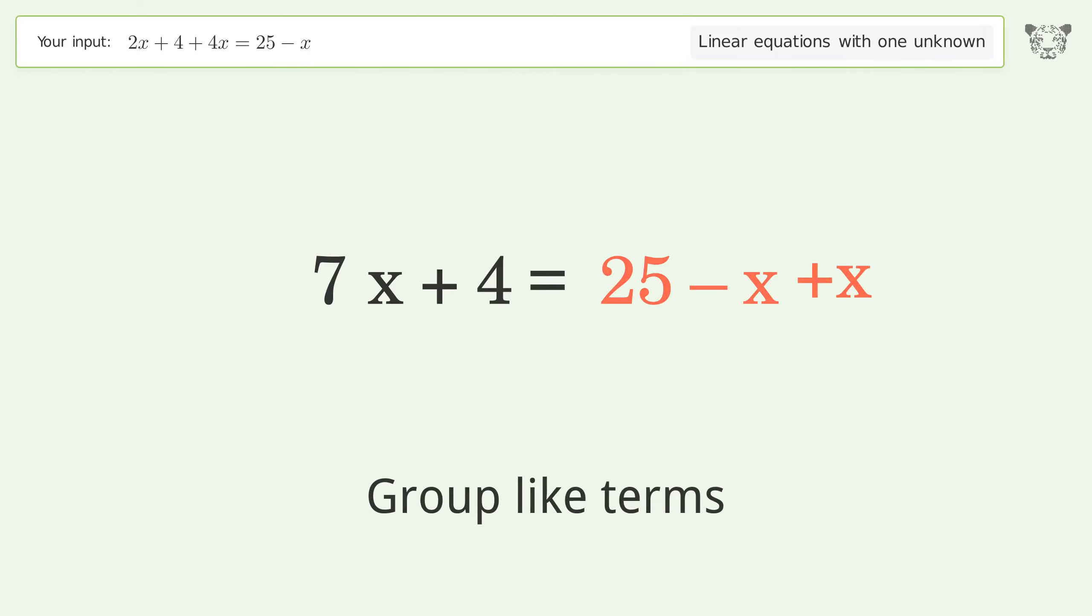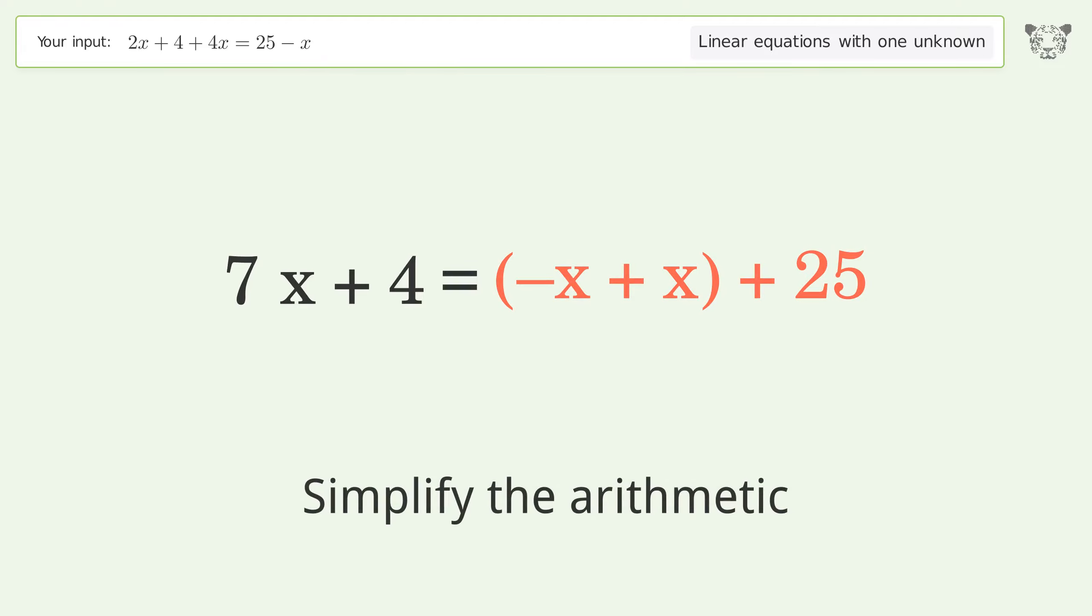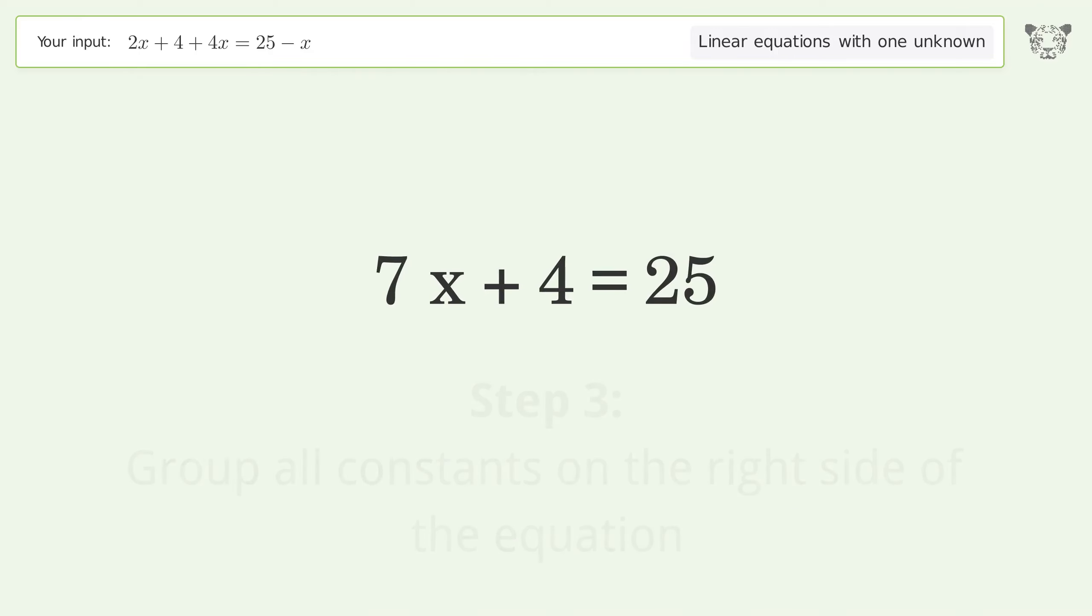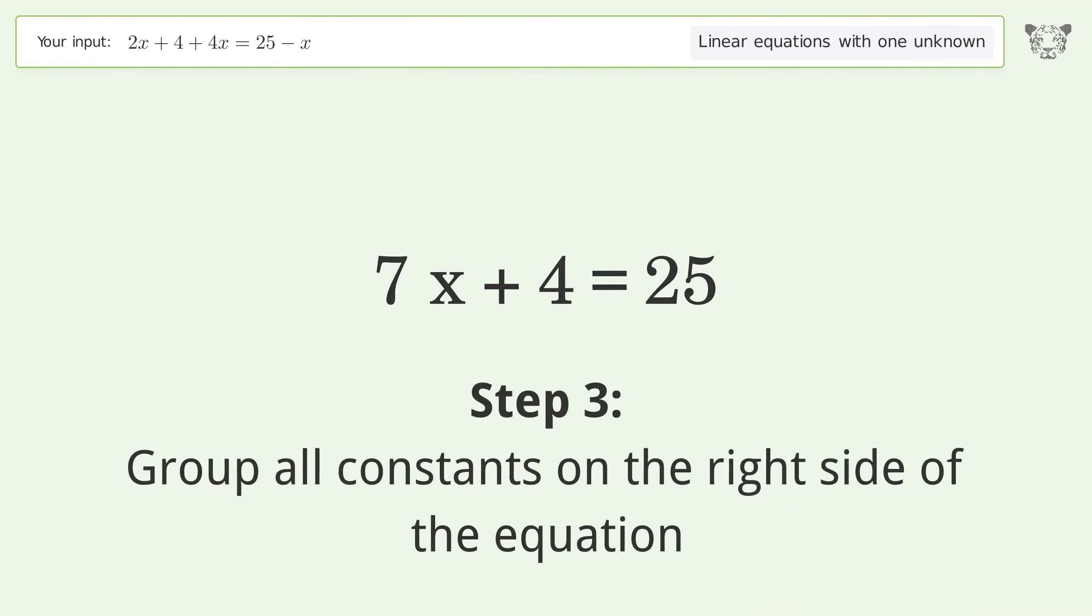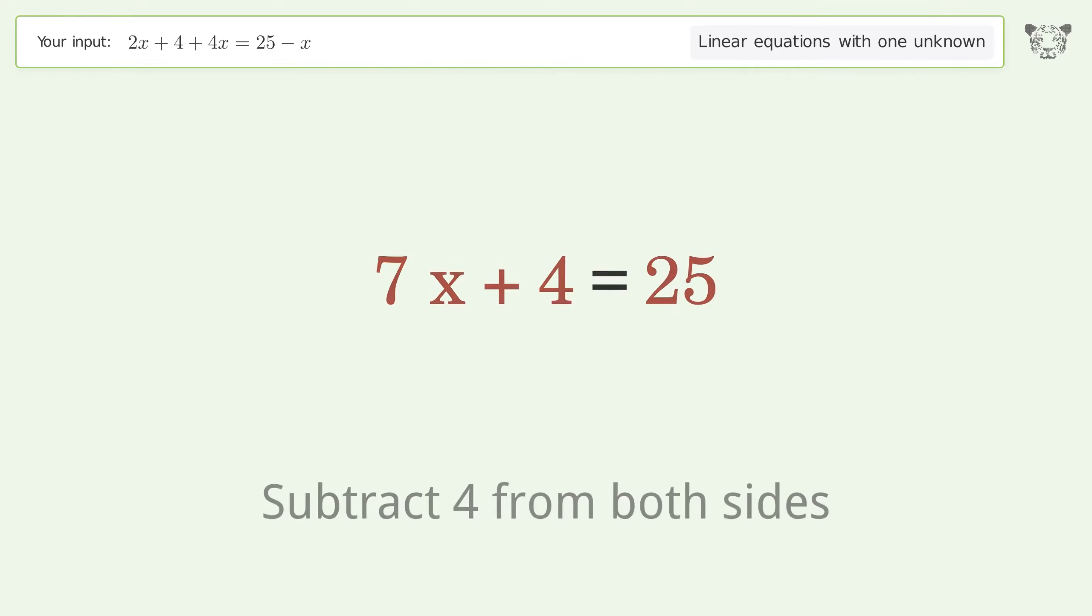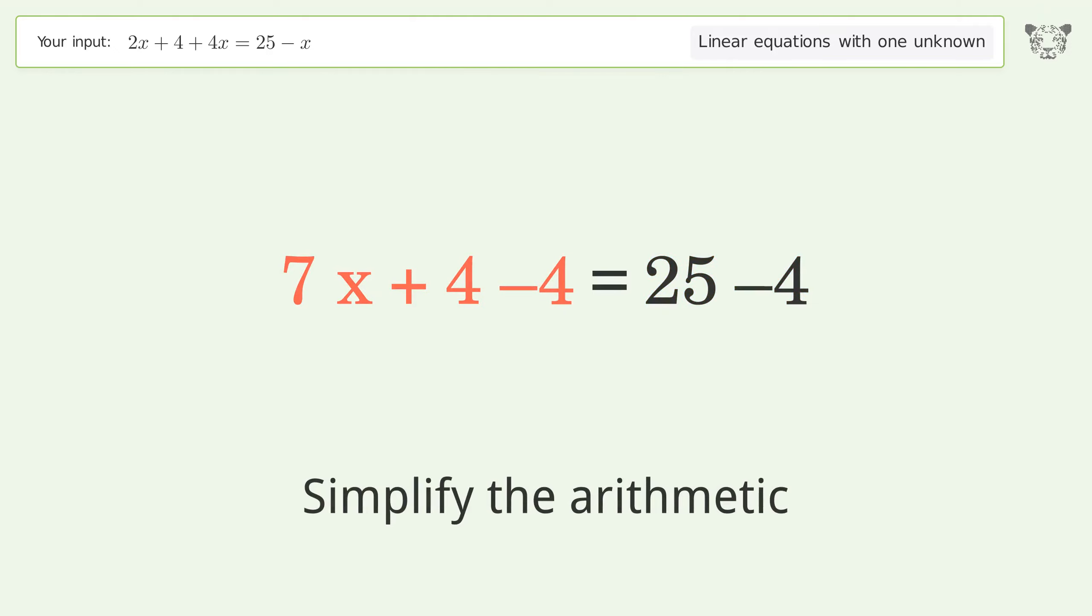Group like terms and simplify the arithmetic. Now group all constants on the right side of the equation. Subtract 4 from both sides and simplify the arithmetic.